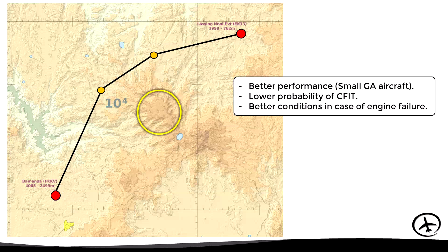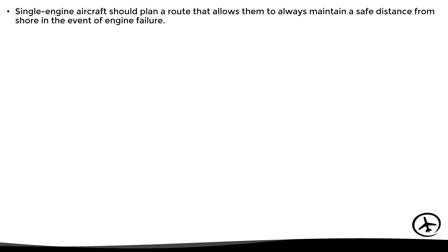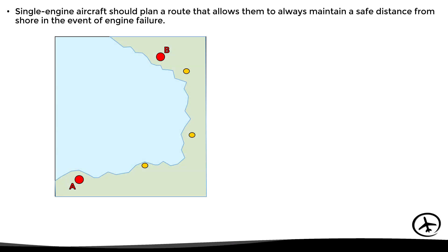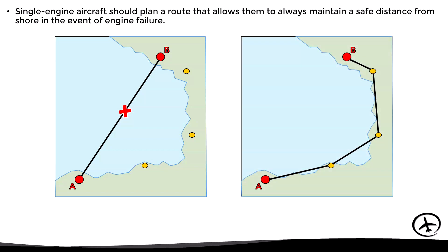With respect to flying over large bodies of water, it depends on the type of aircraft. A multi-engine aircraft would not have significant problems with this. However, single-engine aircraft should plan a route that allows them to always maintain a safe distance from shore in the event of an engine failure, so that they can glide all the way to shore. In this example, if we plan a direct route between A and B, in the event of an engine failure in the middle of the route, the aircraft would be too far from the coast to glide to it. It would therefore be wiser to plan a route along the coast to the destination.